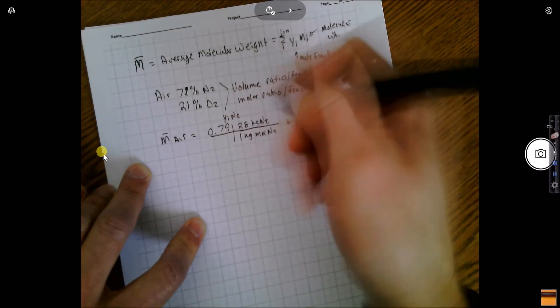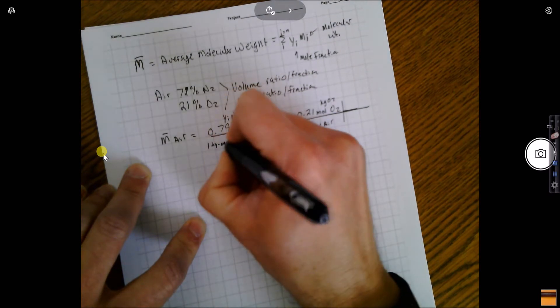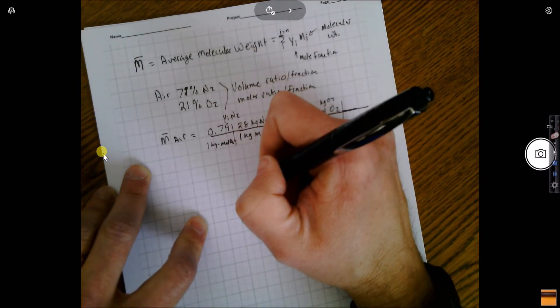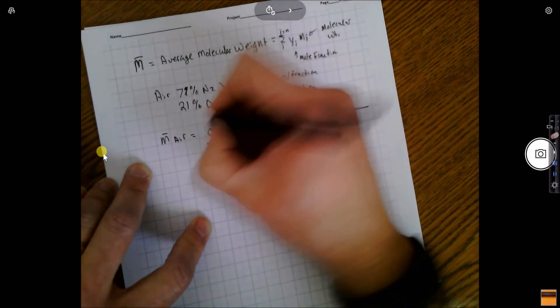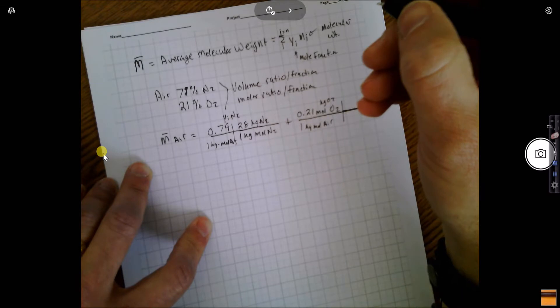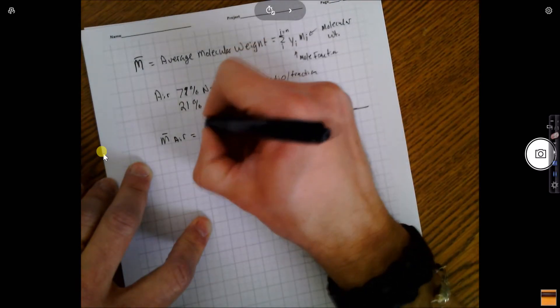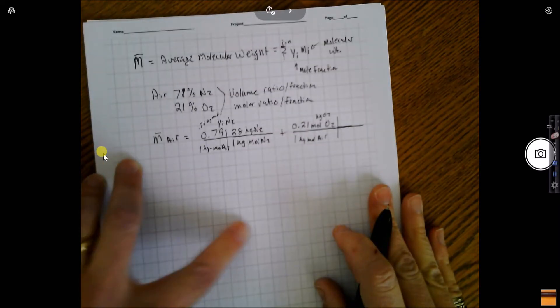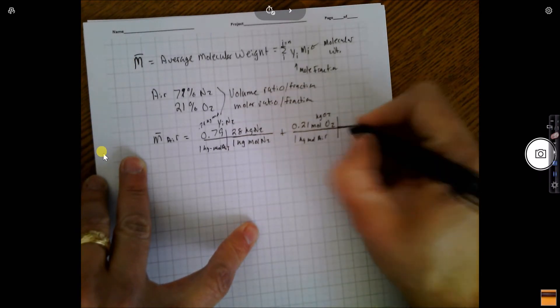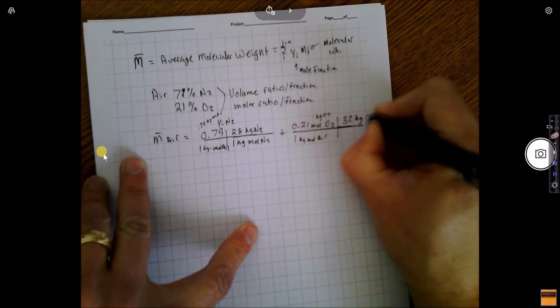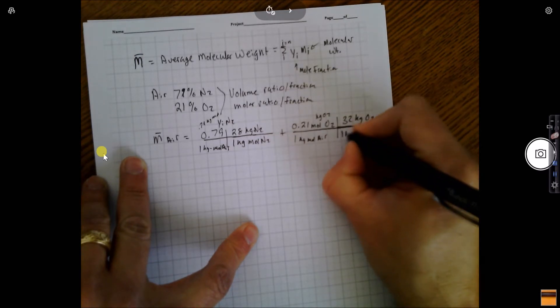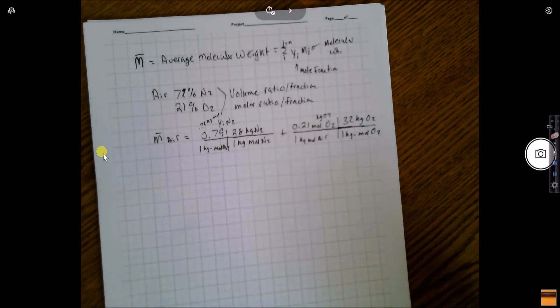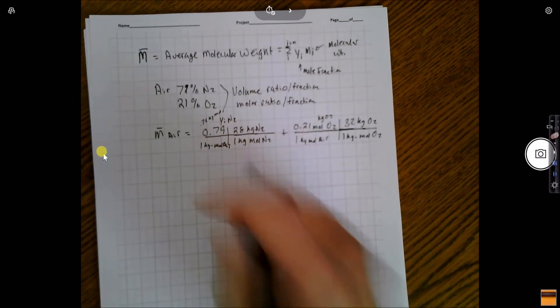That's the fraction. I should have put 0.79 kilogram moles. Forget the bookkeeping, this one's a little bit better, sorry about that. There are 32 kilograms of O2 in one kilogram mole of diatomic oxygen. We've set it up, and I apologize for my poor bookkeeping methodology.